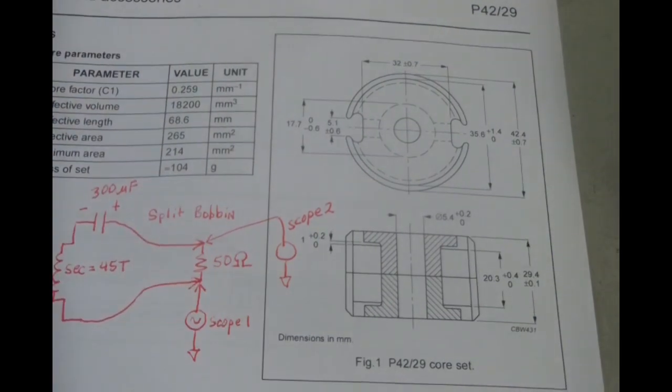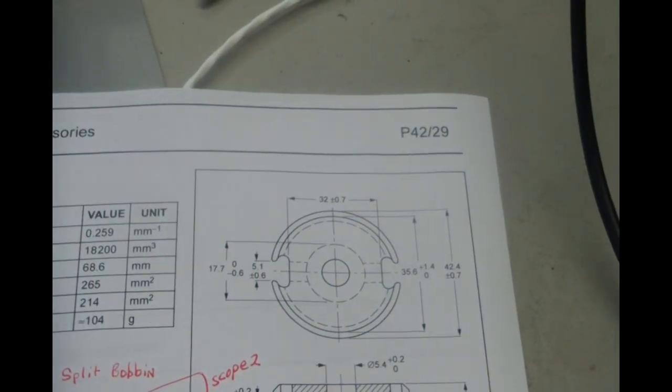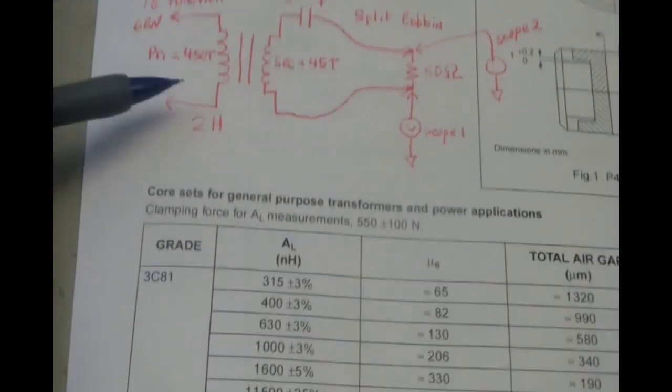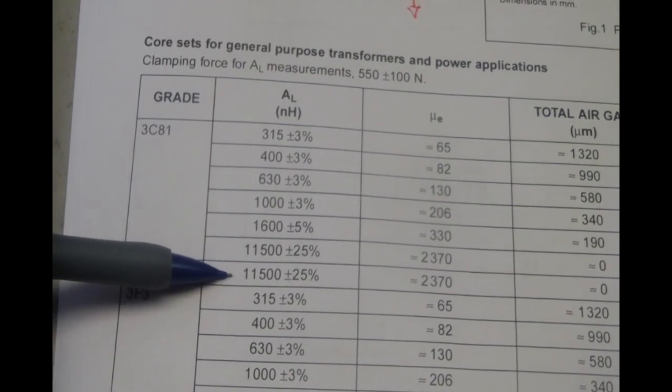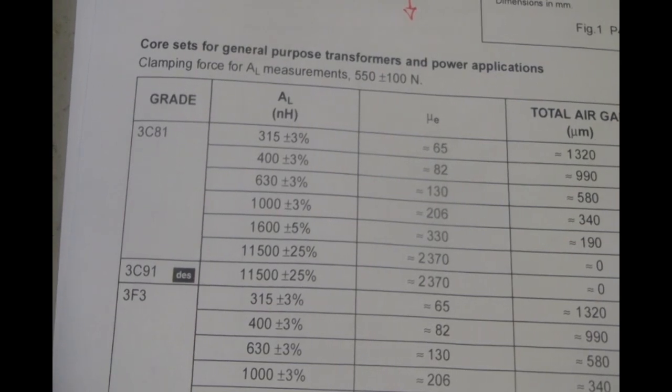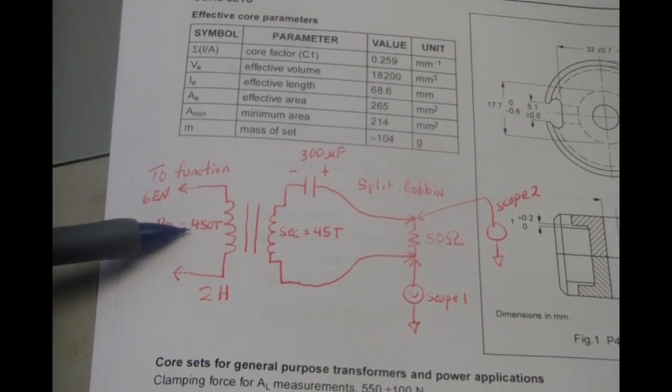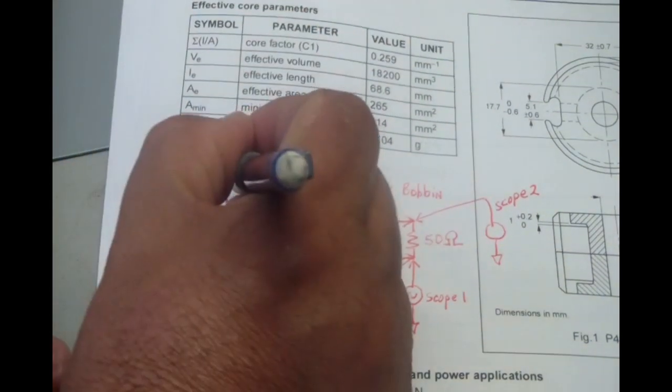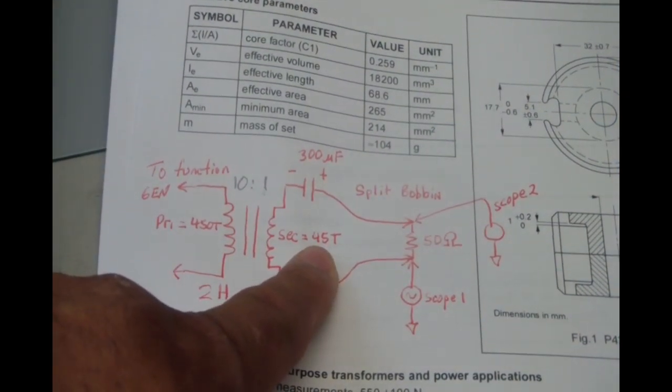The injection transformer that I built is a P-Core. It's a forty-two twenty-nine. And here's a little schematic. I use a 3C91. It's un-gapped. So it has an H-L of eleven thousand five hundred nanohenries. So if you know the turns ratio, you can calculate the inductance. But I believe I ended up with two millihenries. The primary, I ended up having four hundred fifty turns. And since I need a ten to one turn, I made the secondary forty-five turns.